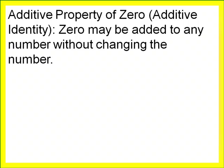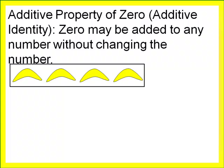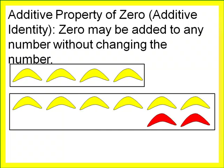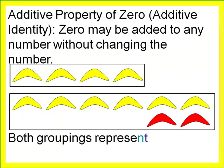Today's video also makes use of something called the additive property of zero. It says that zero may be added to any number without changing the number. Here is a grouping of four yellow counters representing the integer positive four. We can add any number of groups of yellow and red counters to that and still represent the integer positive four. So both of these groupings are ways of representing positive four.